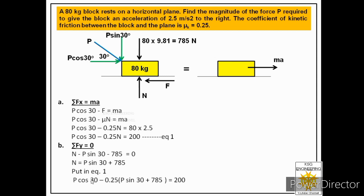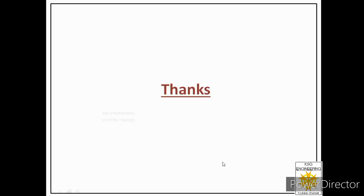Solving that equation, we get P = 535 newtons. Therefore, to move the 80 kg block with an acceleration of 2.5 m/s² to the right using a force applied at 30 degrees to the horizontal, the required magnitude of force P is 535 newtons. I hope the answer to this question is clear to you. Thank you very much.